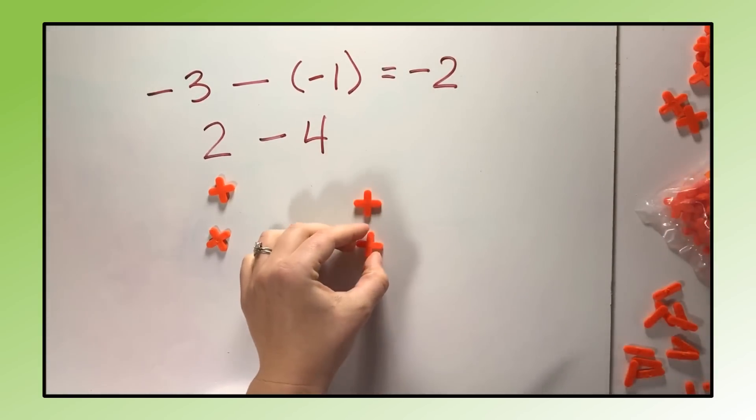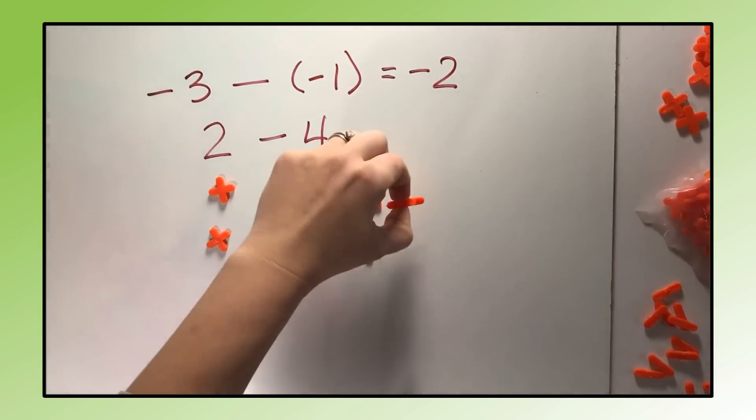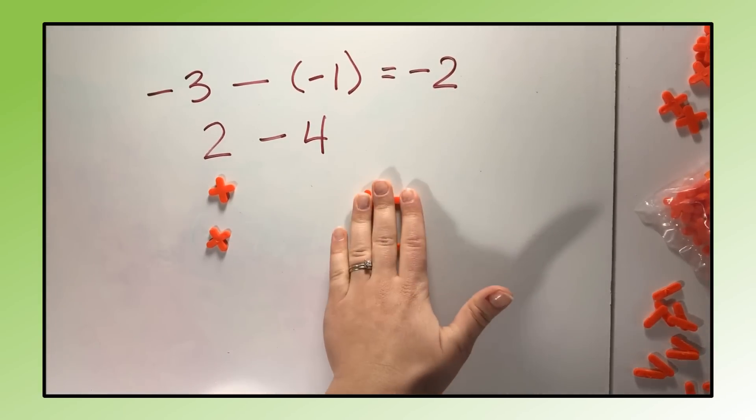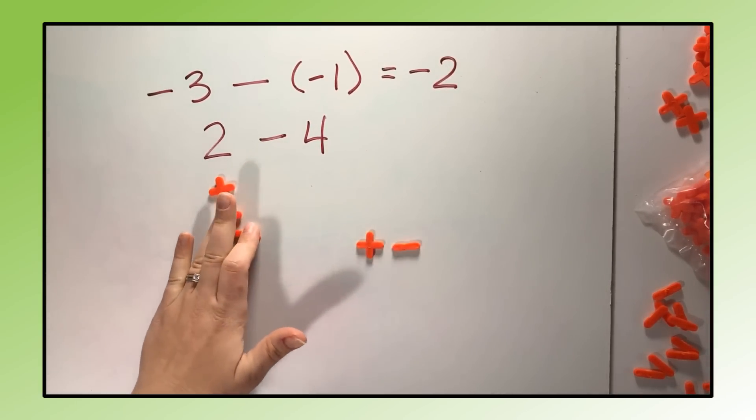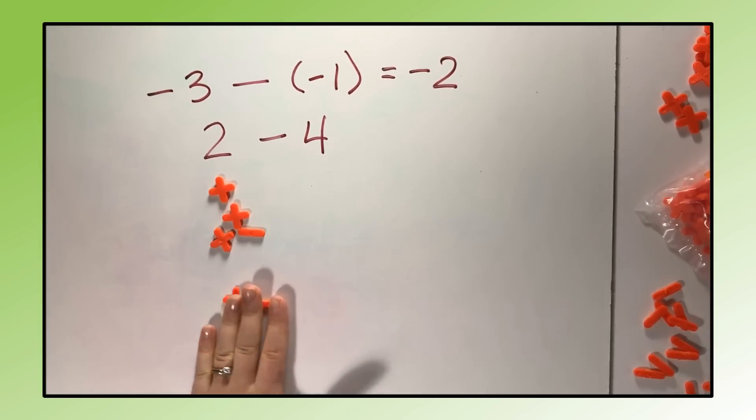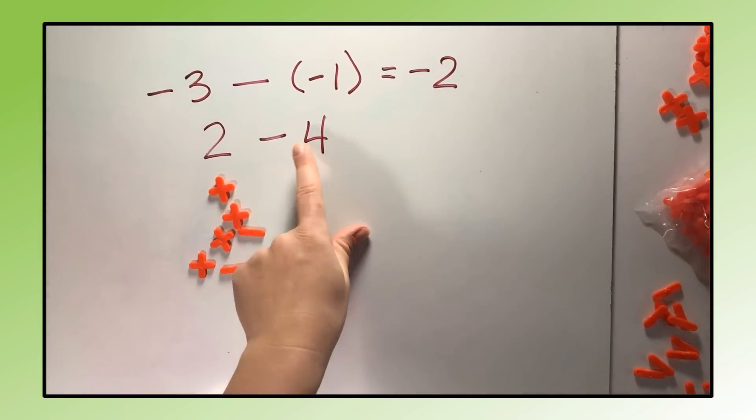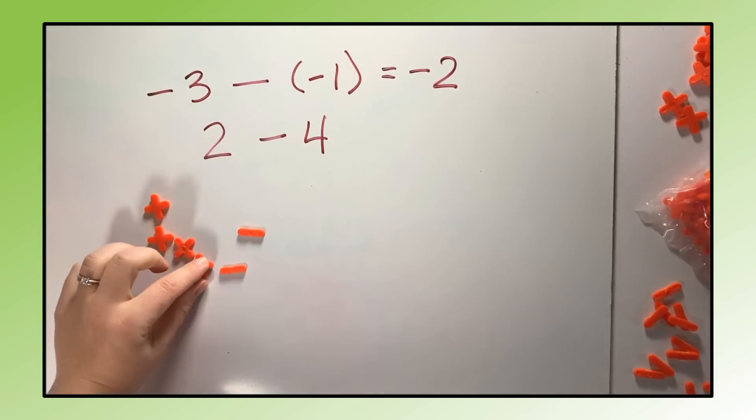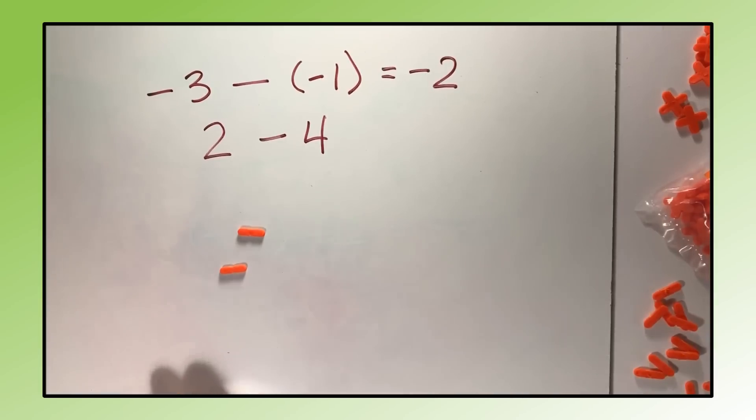If we want to take away four, we're going to need four positives. We can add the two positives that we need as long as we add them in the form of zero, which means we have to add a zero pair each time. I can go ahead and add this in without affecting the answer, and add this in. I added zero twice. Now I do have four that I can take away. So I take away the four positives to do my subtraction, and now I can see what I ended up with and what I have left: negative two.